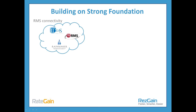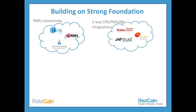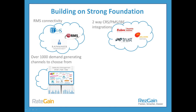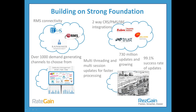Here at RateGain, we're building on strong foundations. We've been effective in the market for about eight years. We have full RMS connectivity with Ideas, Easy RMS, and Rainmaker. We have two-way CRS, PMS, and IBE integrations with Sabre Hospitality, Trust, and XM. We've got over 1,000 demand-generating channels to connect to via ResGain. We're multi-threading and multi-sessional for much faster processing, with 730 million updates completed and a 99.1% success rate of updates — which is very strong.